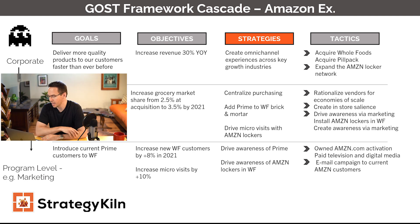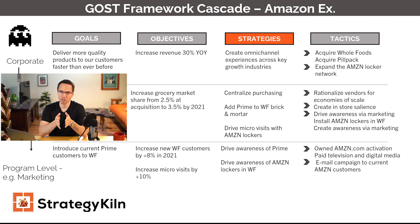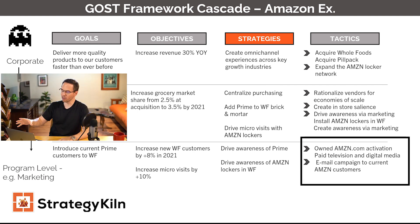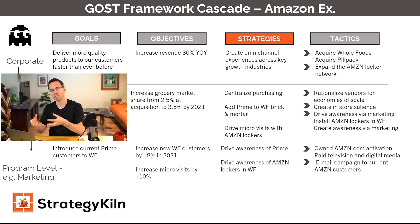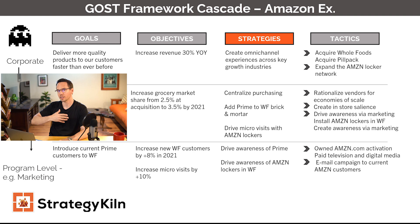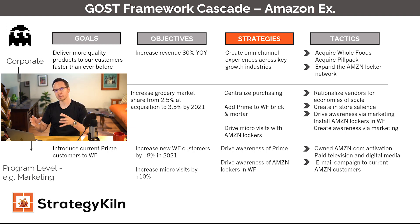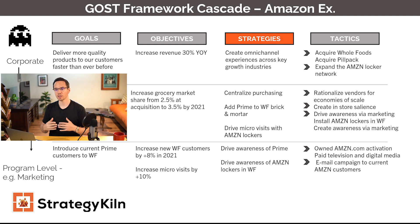Obviously, there's art and science happening here. The strategy is: drive awareness of Amazon lockers in Whole Foods. And then you get to those crystal clear, tangible tactics — an email campaign to current Amazon customers; that's something you can touch. Tactics are tangible, as we talked about in part one. Paid television and digital media — that's another thing you can really point to. So we've shown how the cascade comes together. Sometimes a tactic can become a strategy at a lower level, but everything is reinforced and connected.